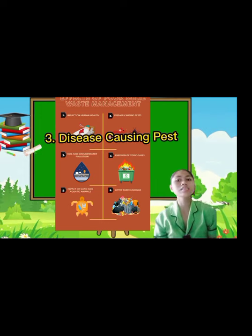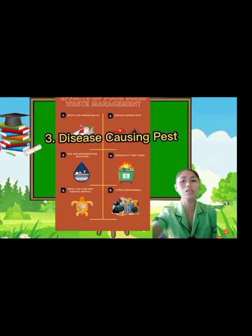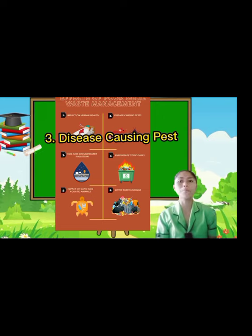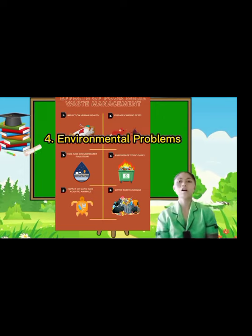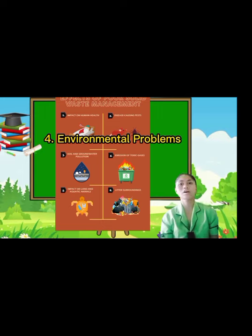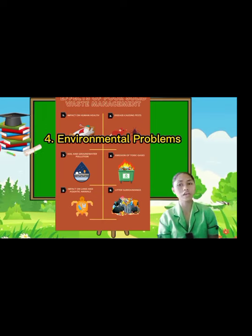Third is disease-causing pests. Dumpster materials force biodegradable materials to rot and decompose under improper, unhygienic, and uncontrolled conditions. After a few days of decomposition, a foul smell is produced, and it becomes a breeding ground for disease-causing insects and infectious organisms. It also spoils the aesthetic value of the area. Fourth is environmental problems. Solid waste from industries is a source of toxic metals, hazardous waste, and chemicals. When released to the environment, solid waste can cause biological and chemical problems that may affect or alter the productivity of the soil in that area.